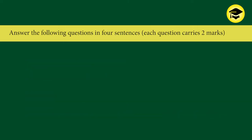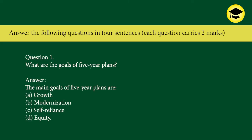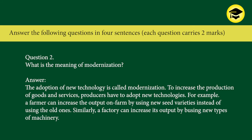Answer the following questions in four sentences — each question carries two marks. Question 1: What are the goals of five-year plans? Answer: The main goals of five-year plans are A) Growth, B) Modernization, C) Self-reliance, D) Equity.